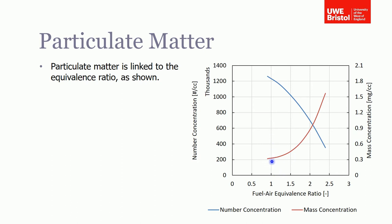This is fuel-air equivalence ratio, so one is obviously stoichiometry - we're fuel rich this side of the one and fuel lean this side of one. You can see that for quite a rich mixture we've got relatively high mass concentration and relatively low number concentration. As we start to go lean, the two graphs kind of cross over.